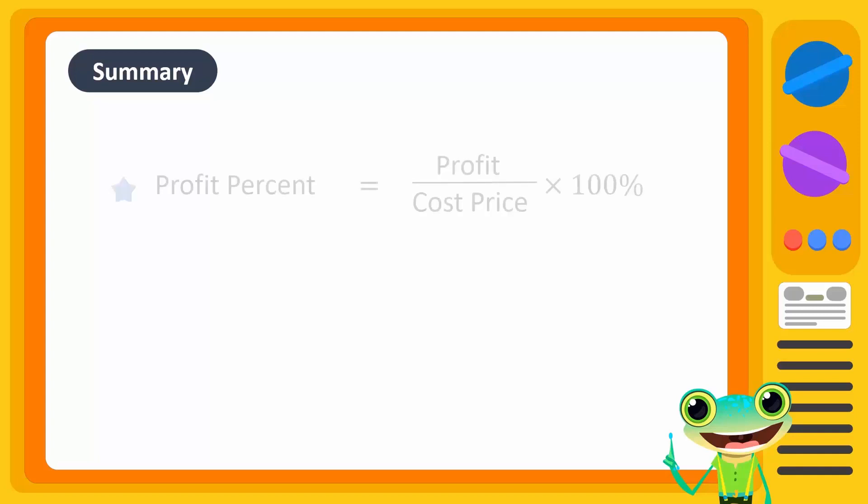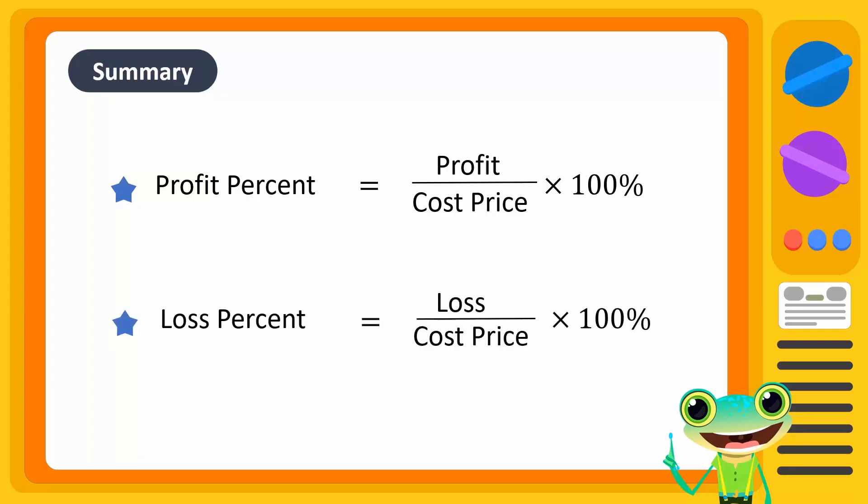To summarize, profit percent is equal to profit divided by cost price multiplied by 100%. Loss percent is equal to loss divided by cost price into 100%. Both percentages are calculated based on the cost price.